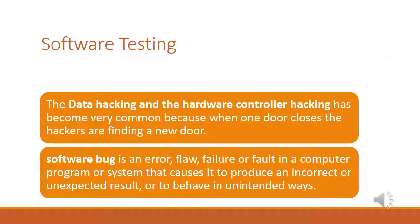The main risks in the software subsystem are data hacking, hardware controller hacking, and software bugs which appear and result in failure of the system. Sometimes the system may be accessed by unauthorized people. Data hacking and hardware control hacking have become very common because hackers are constantly finding new ways to hack systems. A software bug is an error, failure, or fault in a computer program that causes it to produce an incorrect result or unusual behavior.